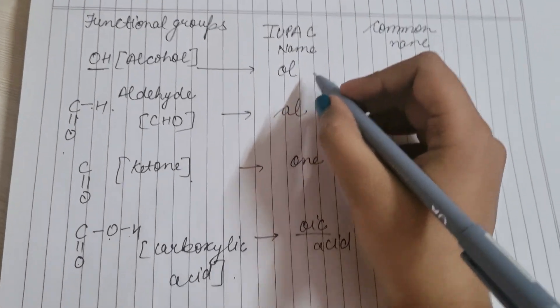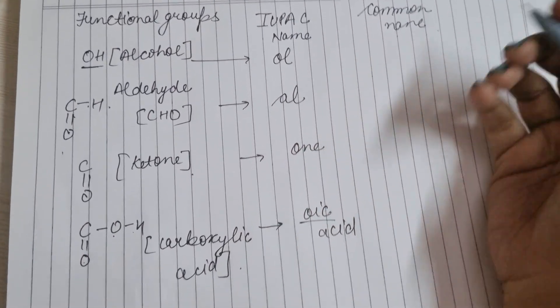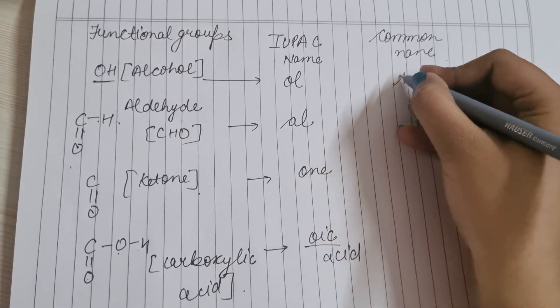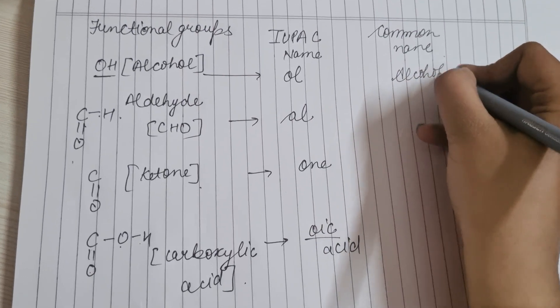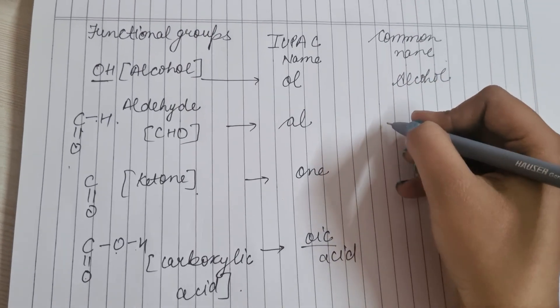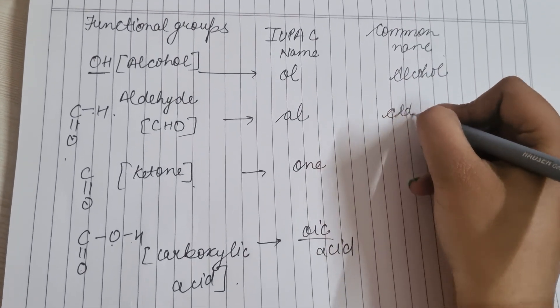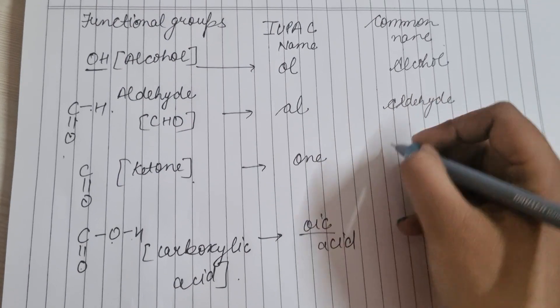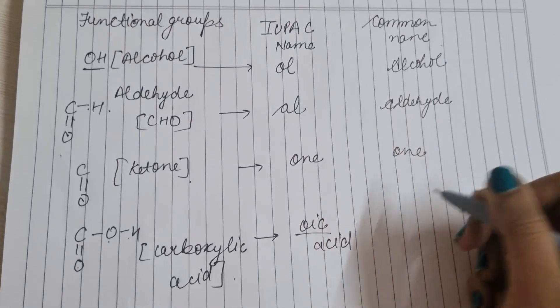अब अगर common name की बात करें, तो common name में alcohol को 'alcohol', aldehyde को 'aldehyde', ketone को 'one' ऐसे बोलते हैं।